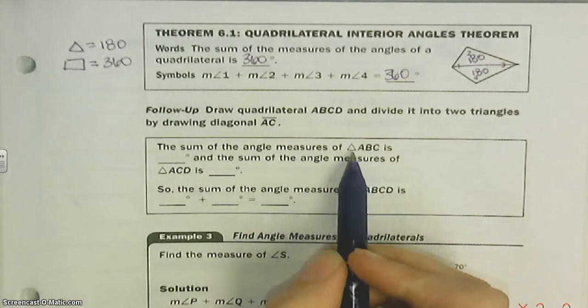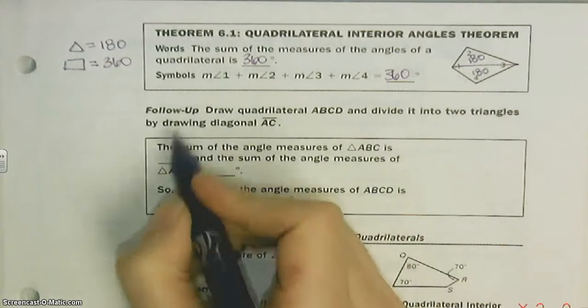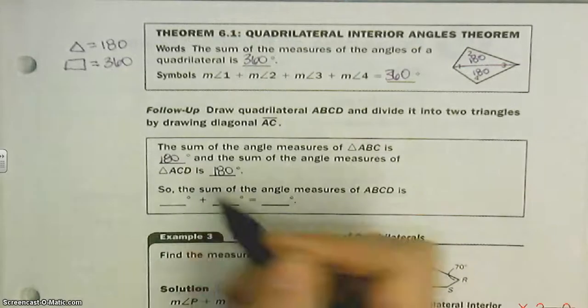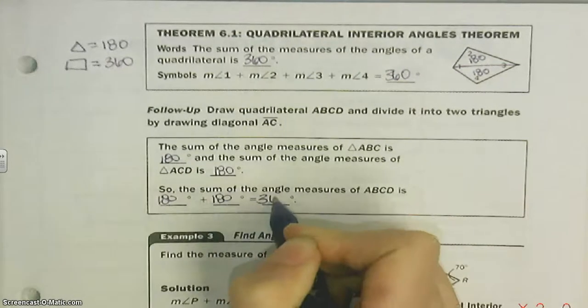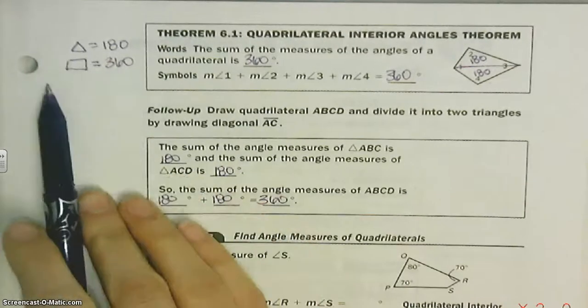All right, so here's where we just did that. We divided it into two triangles. So we had 180 on top, 180 on bottom. 180 plus 180, 360. So triangles equal 180, quads equal 360.